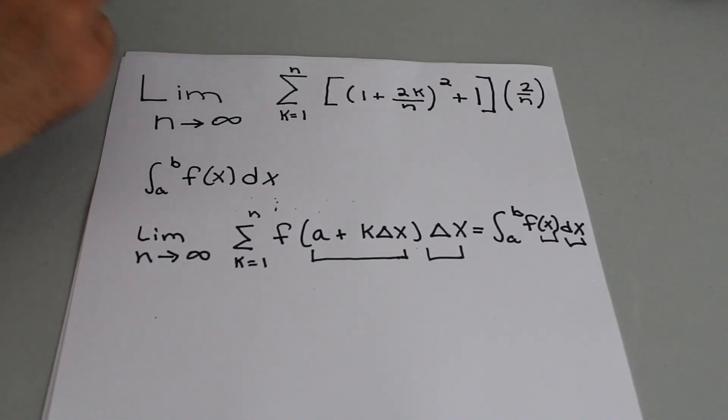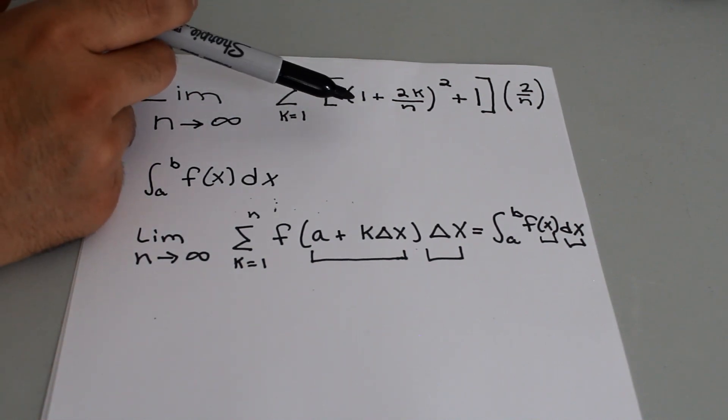Do we have something in the original problem that looks like a plus k delta x? Well we have 1 plus 2k over n.